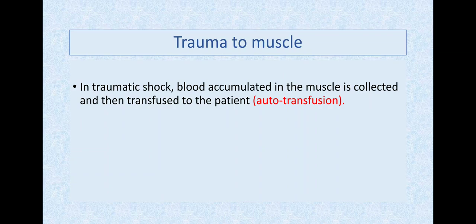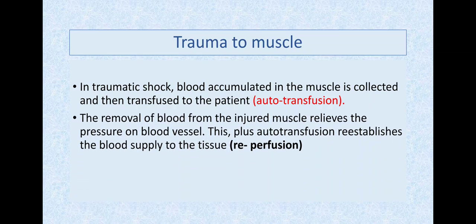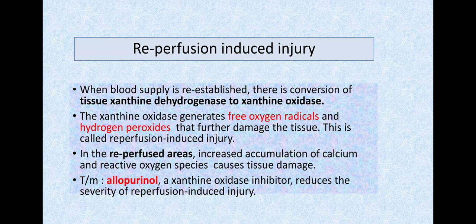But when muscles were ischemic with reduced blood flow, they developed inflammatory reaction and oxidative stress, so muscle can't recover even with reperfusion. Removing blood relieves pressure and provides reperfusion, but the person is still not fine. This is reperfusion-induced muscle injury. When blood flow is re-established, there's conversion of tissue xanthine dehydrogenase to xanthine oxidase. Free oxygen radicals and hydrogen peroxide are generated, further damaging tissue.